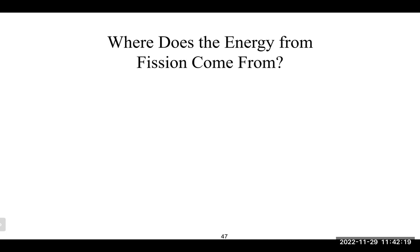We talked about stability and the neutron-to-proton ratio. Up to about 20 protons, a ratio of 1 is pretty stable. From about 20 to 40, about 1.25. From there to about 80, about 1.5. Anything above 84 is pretty much going to be radioactive. If the ratio is not stable, the nuclei will undergo a decay process to fix that ratio. If it's too high it does beta decay; if too low, positron emission or electron capture.